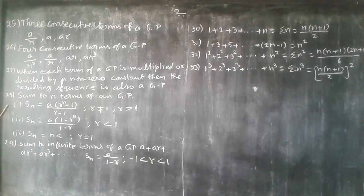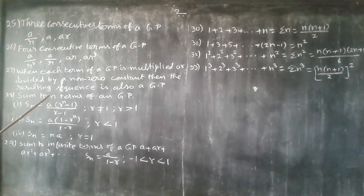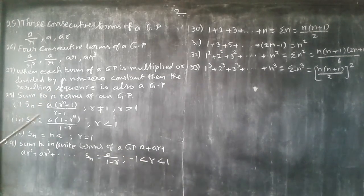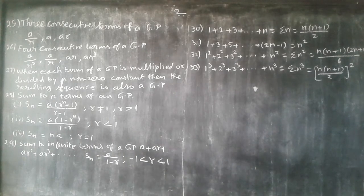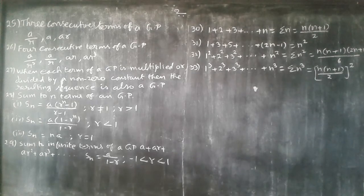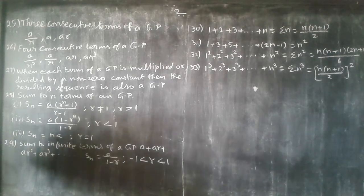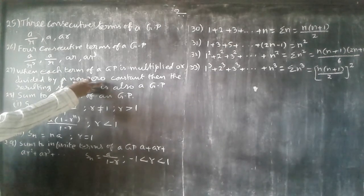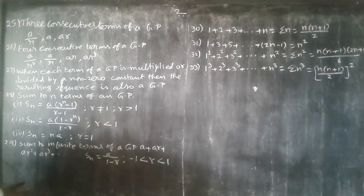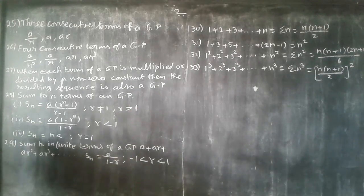27th. When each term of a GP is multiplied or divided by a non-zero constant, then the resulting sequence is also a GP.